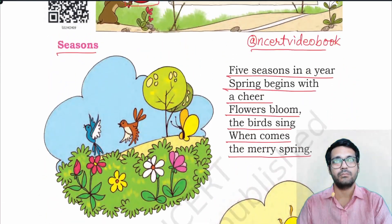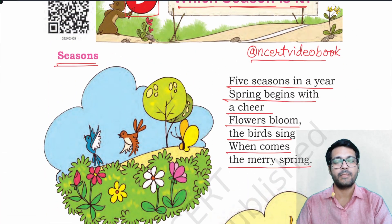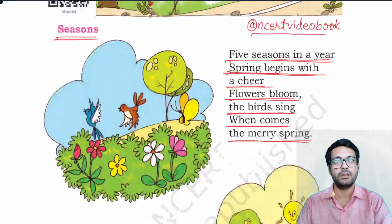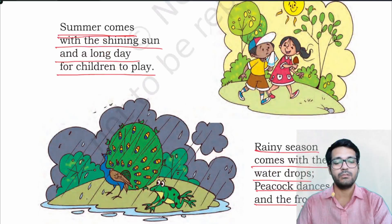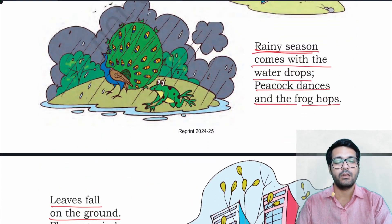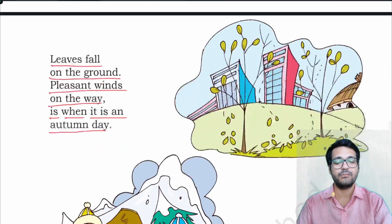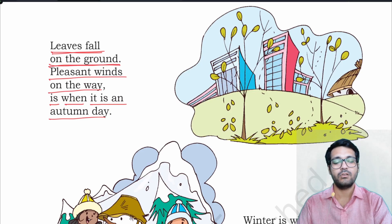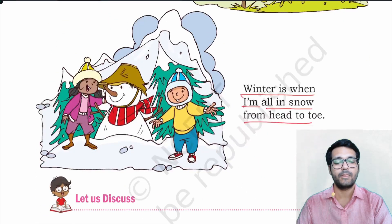Let's read the poem once again. Five seasons in a year. Spring begins with a cheer. Flowers bloom, the birds sing, when comes the merry spring? Summer comes with the shining sun and a long day for children to play. Rainy season comes with the water drops, peacock dances and the frog hops. Leaves fall on the ground, pleasant winds on the way — that is when it is an autumn day. Winter is when I am all in snow from head to toe.